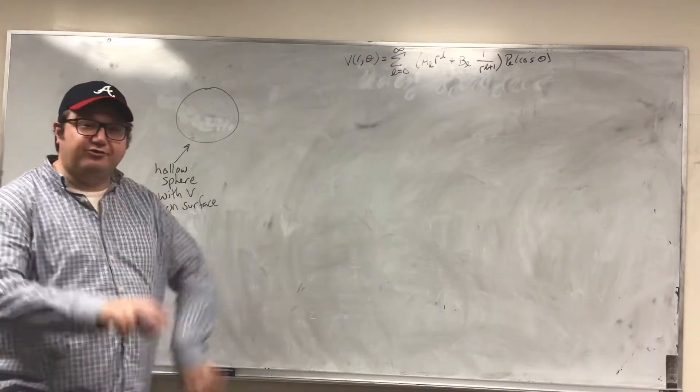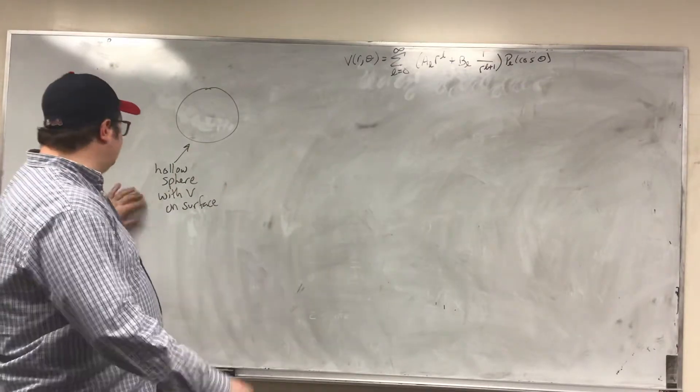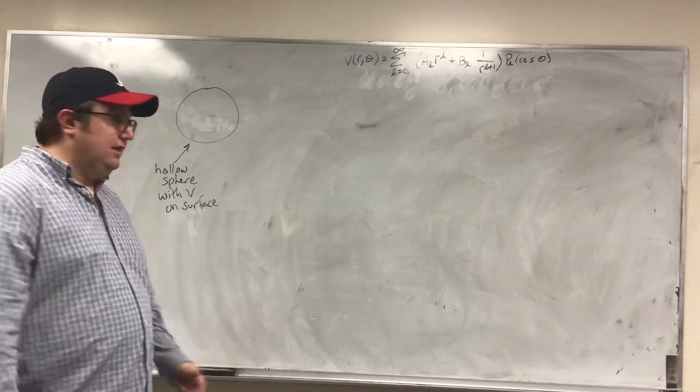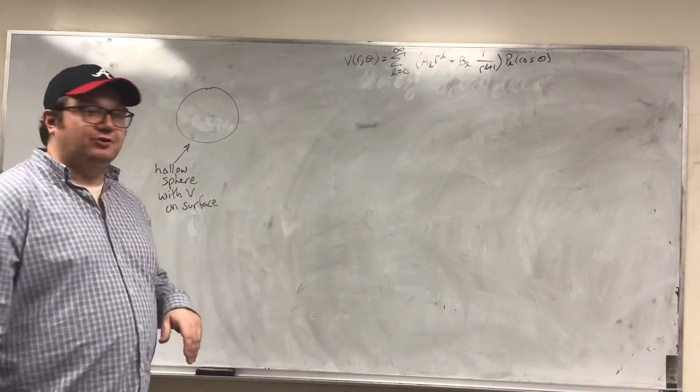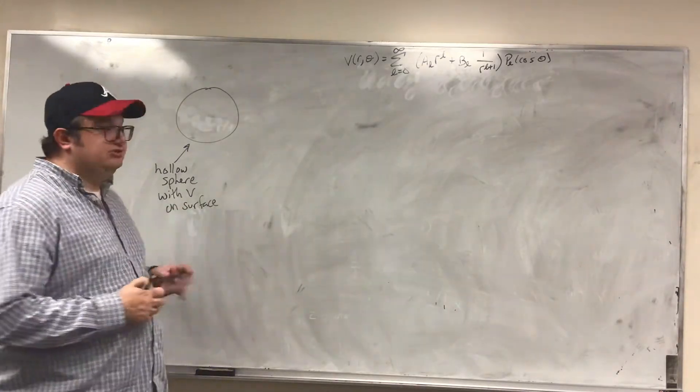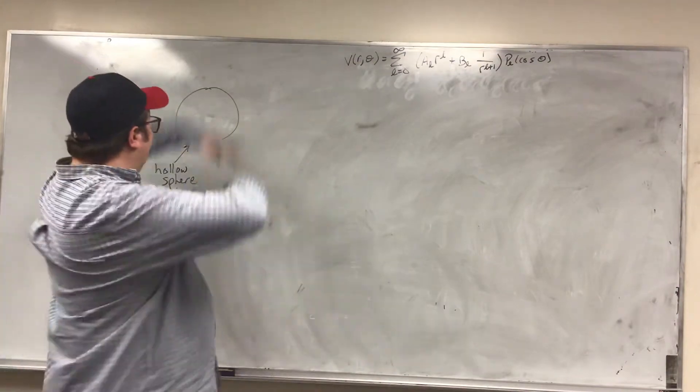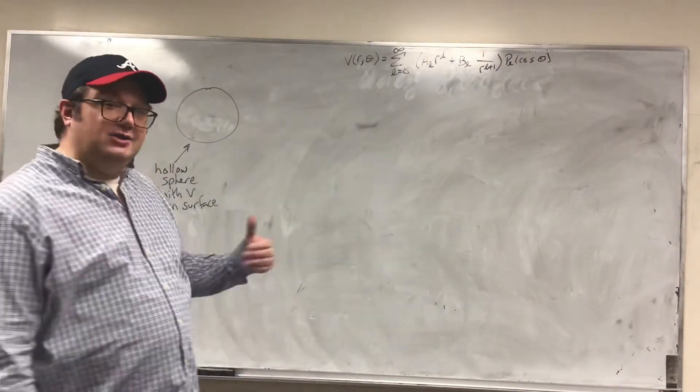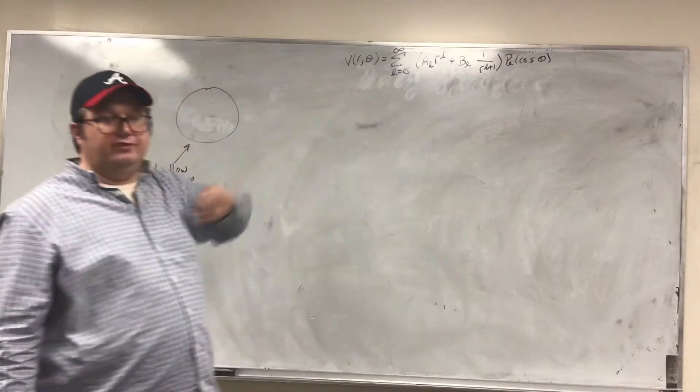Imagine that I had a hollow sphere. And on the edge of the sphere, it is powered up to have a voltage V on that surface. The big question is, what would the voltage be everywhere else?